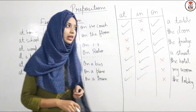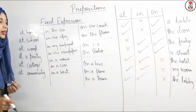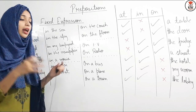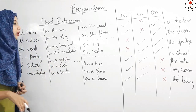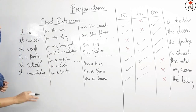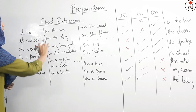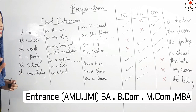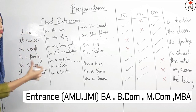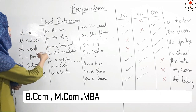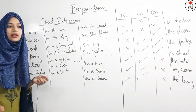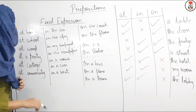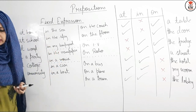Now for fixed expressions with IN: in the sea — like fish in the sea; in the sky — like clouds in the sky; in my backyard — for example, there can be a swimming pool in your backyard. Also, 'in the newspaper' and 'in a movie' are fixed expressions with IN.